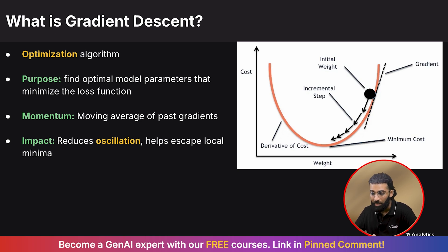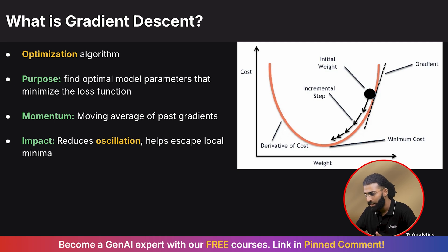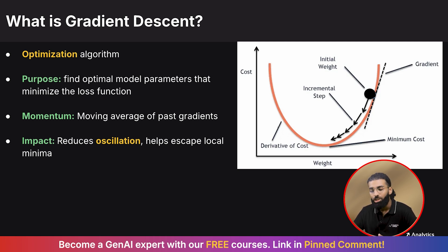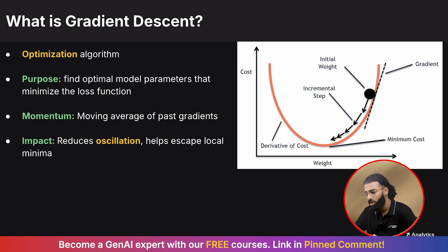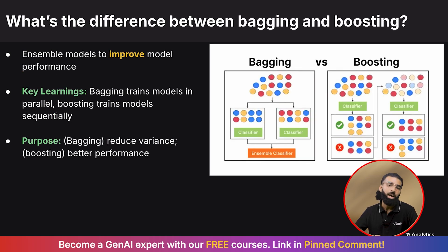You should also explain components like momentum, which introduces a moving average of past gradients to smooth out updates and speed up convergence. The impact is that it reduces oscillation and helps escape local minima.